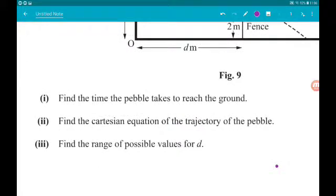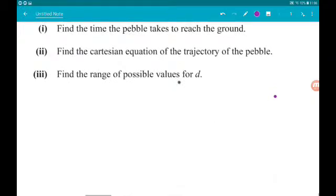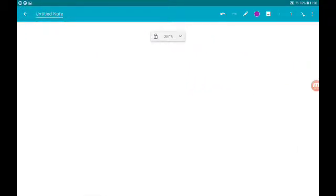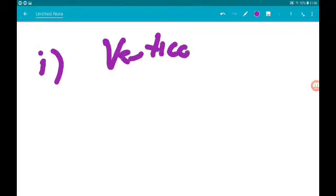Part 1 for 3 marks says find the time the pebble takes to reach the ground. So if we are interested in the pebble hitting the ground, we are interested in the vertical motion of the pebble. We have vertical motion, should probably write that down first of all.